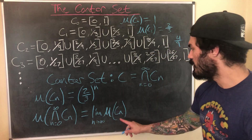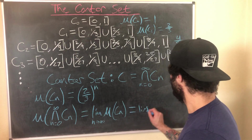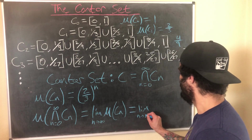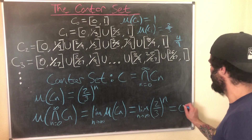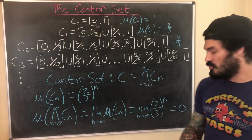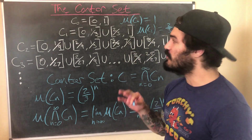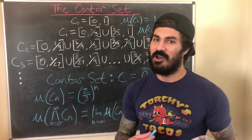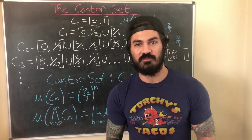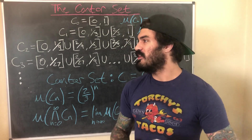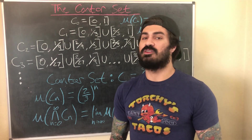The measure of Cₙ is (2/3)ⁿ, so we need the limit as n → ∞ of (2/3)ⁿ, which equals zero. So the Cantor set has measure zero. It also turns out this set is uncountable — which for me was counterintuitive at first, because one of the first things you learn in a measure theory course is that any countable set has measure zero.